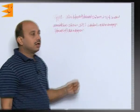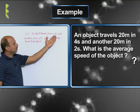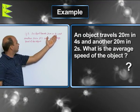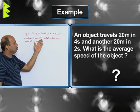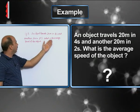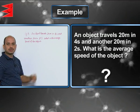See Example 1: an object travels 20 meters in 4 seconds and another 20 meters in 2 seconds. What is the average speed of the object?